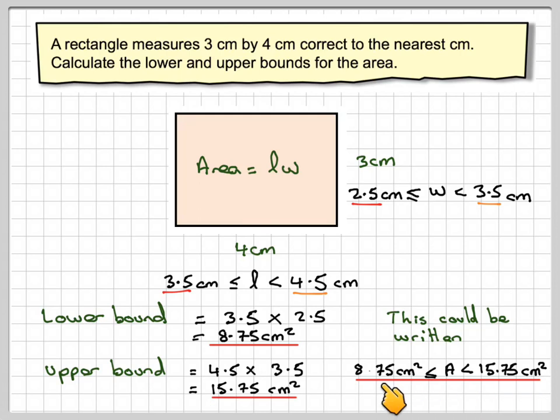It can be equal to this one, but not equal to this one. This is called the upper bound, and this is called the lower bound.